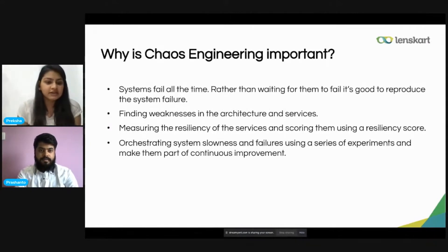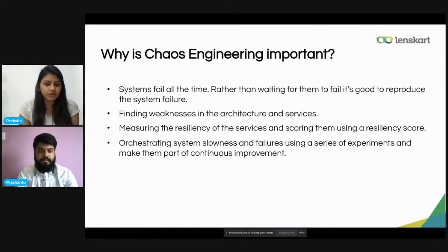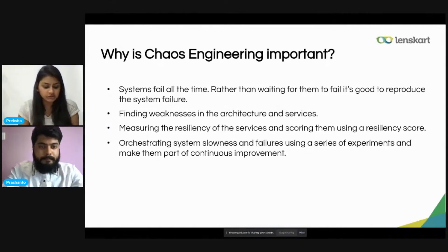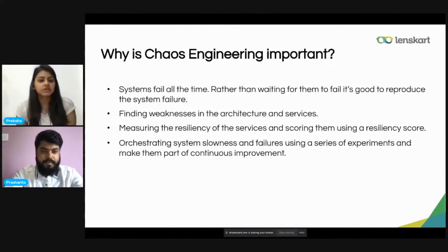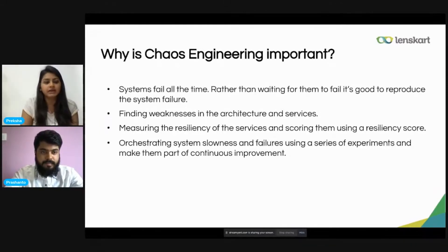Finding the weaknesses in the architecture and services is another key reason. By performing a Chaos experiment, one can find out how their architecture or service would fail in production. It's good to find out the weaknesses in our architecture or service beforehand so that we can work on those weaknesses and improve our system.